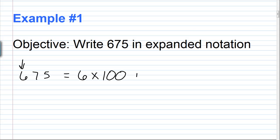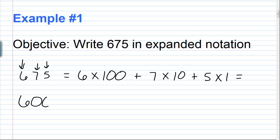Then I'm going to add to that this 7 multiplied by its corresponding place value. The 7 is in the tens place, so I'd have 7 times 10. Working my way to the right, then plus 5, and the 5 is in the ones place, so I'm going to have 5 times 1. Now going through and doing the multiplication: 6 times 100 is 600, plus 7 times 10 which is 70, plus 5 times 1 which is 5. So 675 written in expanded notation is 600 plus 70 plus 5.